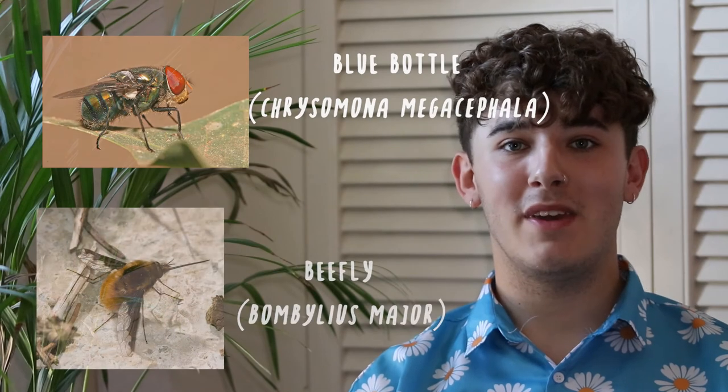Moving on, we have the Diptera, commonly known as the flies. Diptera means 'two wings', which is a distinct characteristic of the group. Many flies have their second pair of wings reduced into structures known as halteres, which are used to increase stability in flight. They're extremely diverse in their feeding strategies, feeding on nectar, feces, blood, and more. Common species include the bluebottle fly and the bee fly.